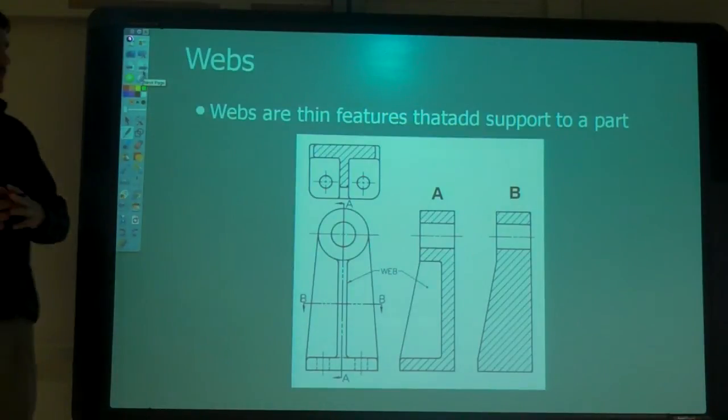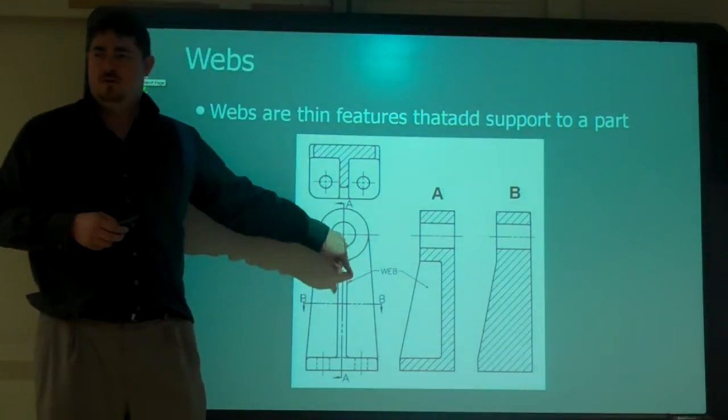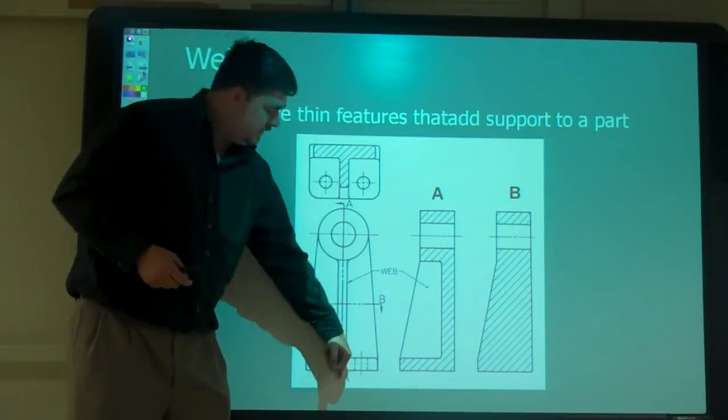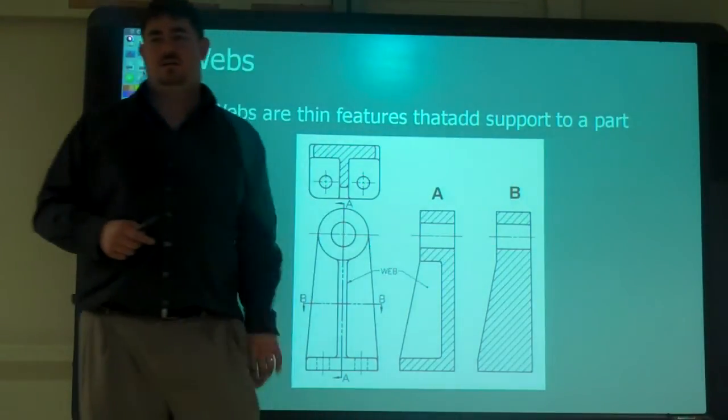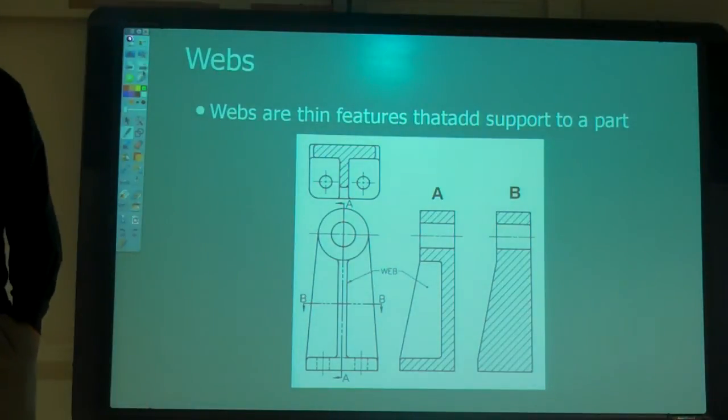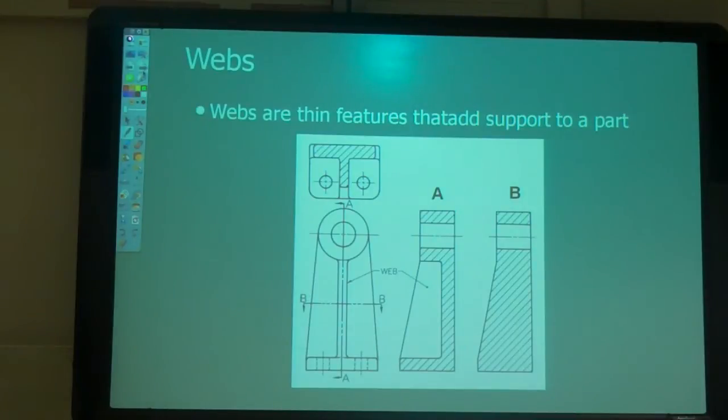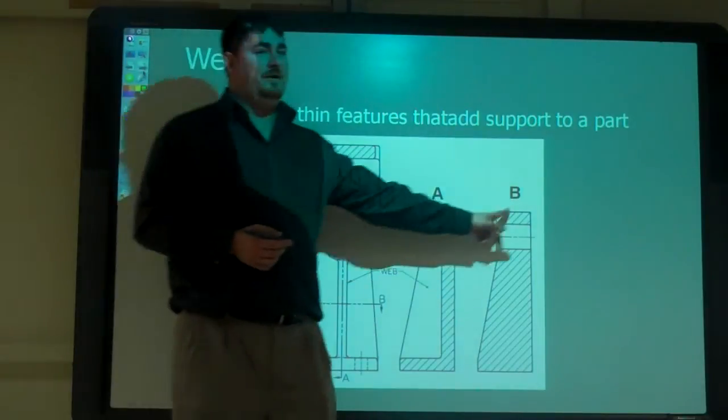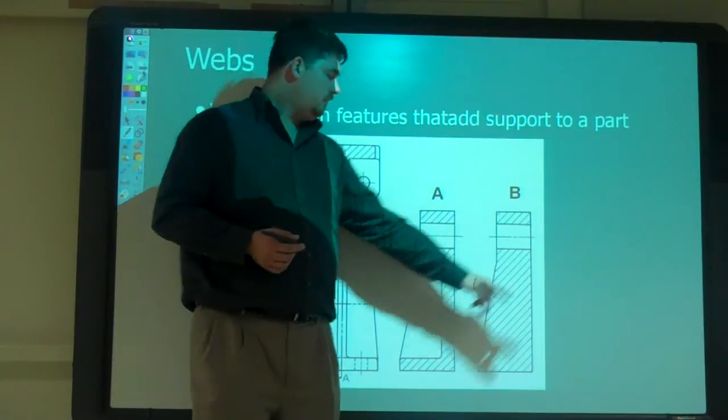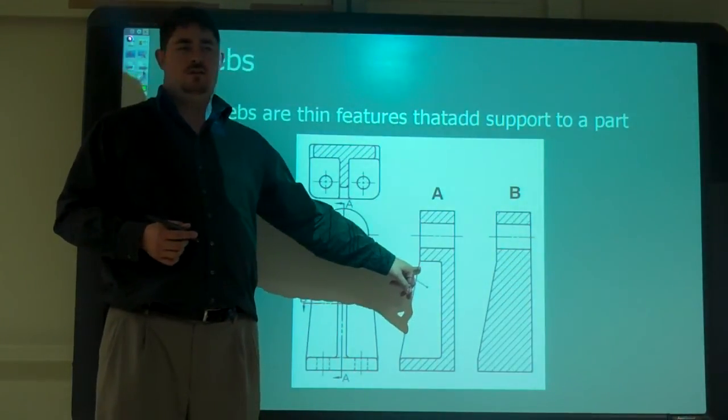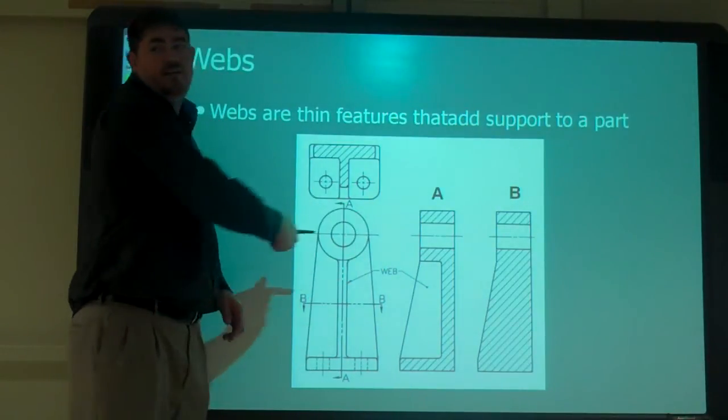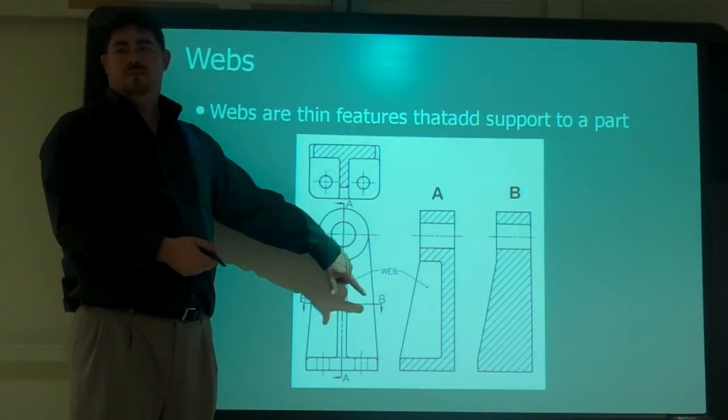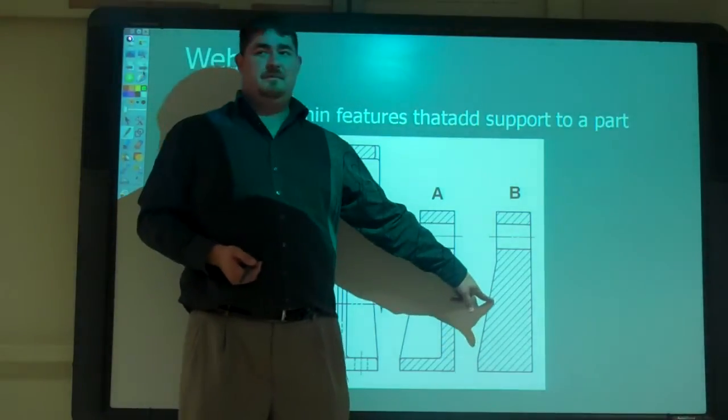Alright, so when we're doing sections and we have webs, so like here we have a web, which one is right? If we're doing section AA down the middle, which one of these is correct? B, A, B or A? If you were real literal and you cut it right down the middle, you'd get B, right? That's what you would actually get if you cut it down the middle. But we draw it like A. Because is this web providing strength this way, side to side? Is it the whole width of the part, side to side? No.